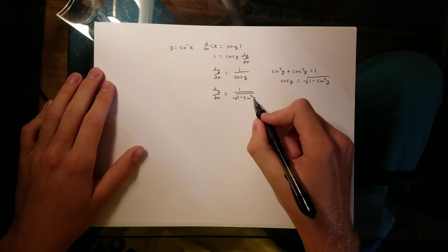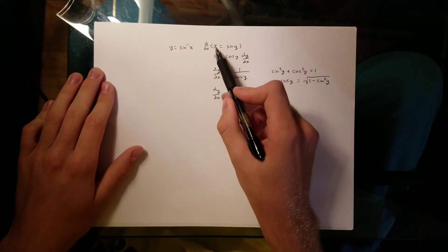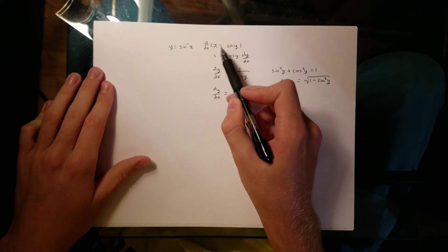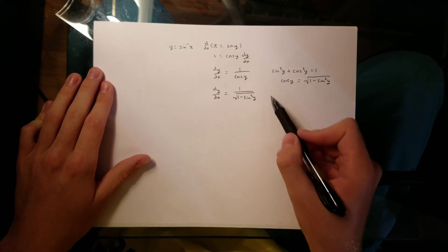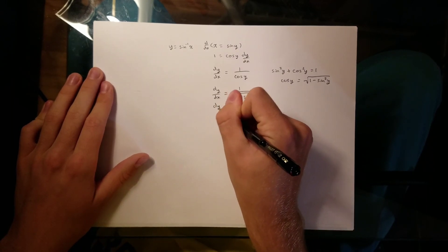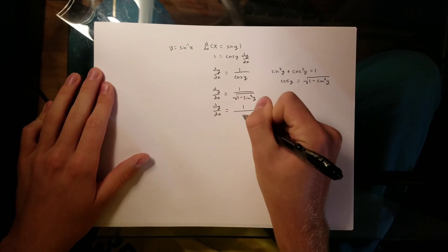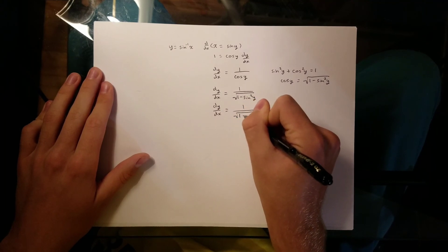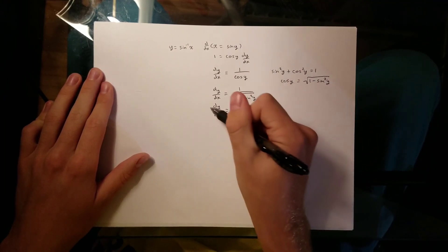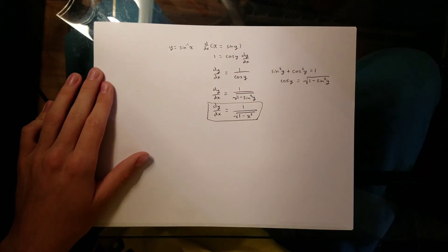Now sine squared y — up here we have x is equal to sine of y, so we can actually plug in x for sine of y. So what we'll be left with is dy/dx is equal to 1 over the square root of 1 minus x squared. And that is our answer. Thank you for watching.